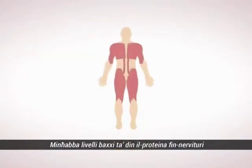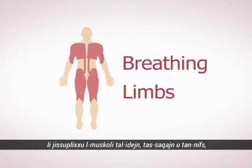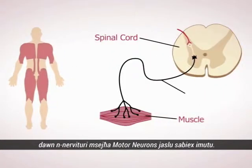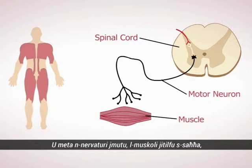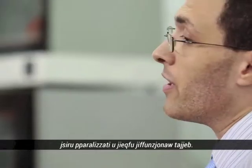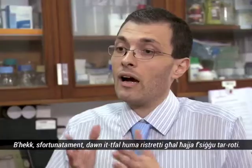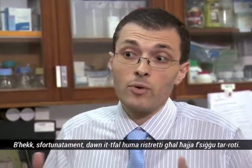Now, low levels of this protein in the nerves which supply the muscles of the limbs, and also the muscles that control breathing, cause these nerves — we call them motor neurons — to die. And when they die, the muscles just become weak, they become paralyzed and they stop functioning well. So these children, unfortunately, are restricted to a life in a wheelchair.